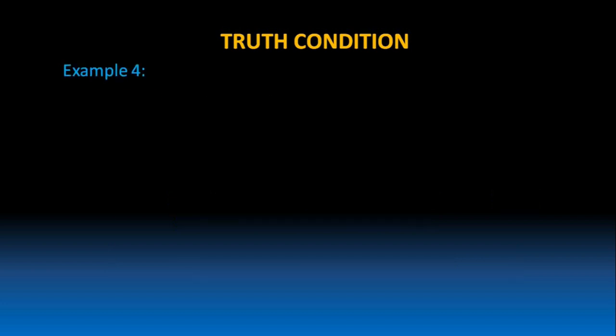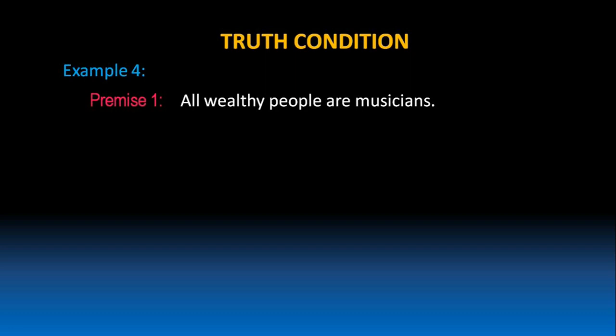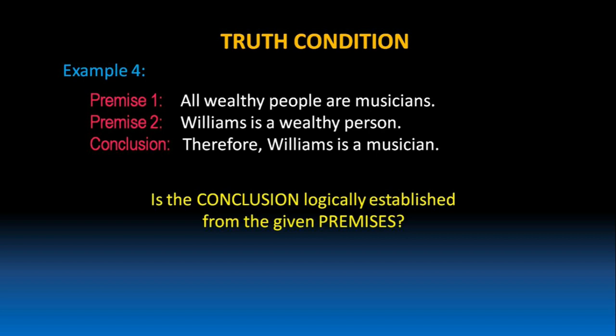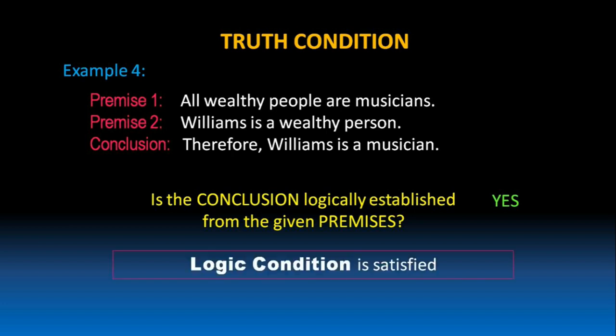Let's take one more example. All wealthy people are musicians. Williams is a wealthy person. Therefore, Williams is a musician. In this example, is the conclusion logically established from the given premises? Yes, of course, because premise 1 says all wealthy people are musicians. We can conclude Williams is a musician because he is a wealthy person. So, the logic condition in the above argument is satisfied.